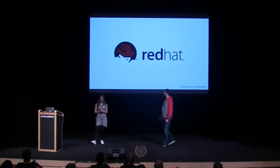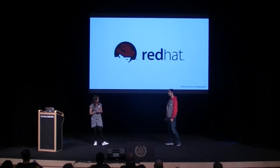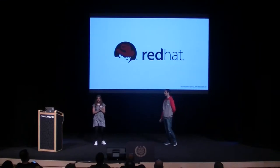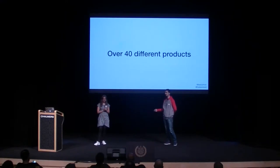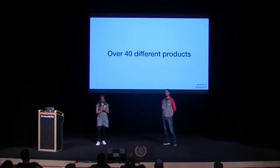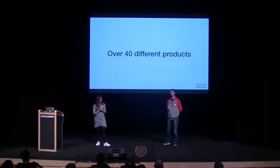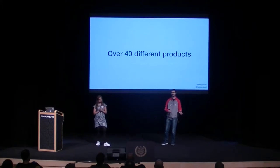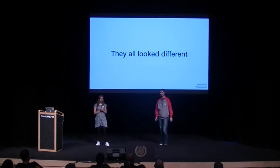We both work at Red Hat, which is all about open source, based in Brno, Czech Republic. This is our largest engineering facility in Europe. Red Hat has a lot of products — over 40 different ones. Some of them have user interfaces, some of them not. When you have 40 different products, it's a challenge because they all look different.